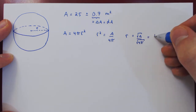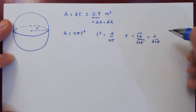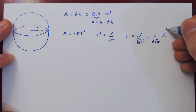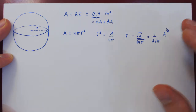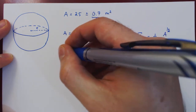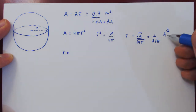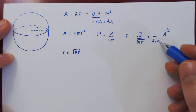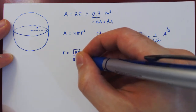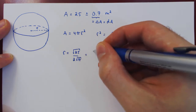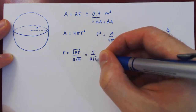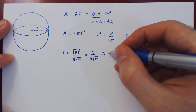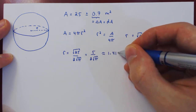The root of 4 is 2, so we have R = (1 / (2√π)) × A^(1/2), rewriting the square root of A as A to the one-half for later differentiation. We can now find the value of the radius: root of 25 is 5, over 2√π, which is approximately 1.410 meters.